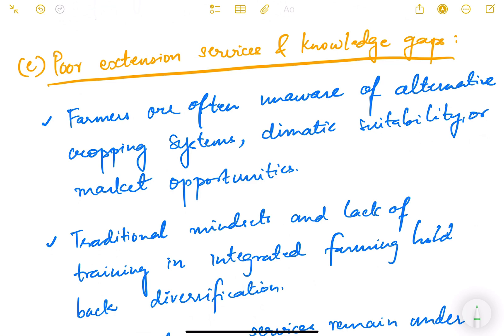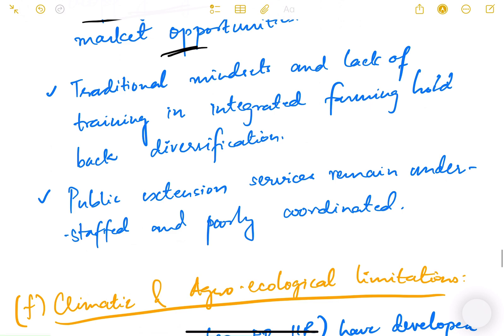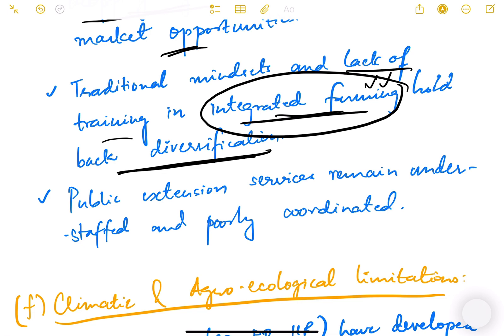The next constraint is poor extension services and knowledge gaps. Farmers are often unaware of alternative cropping systems. Extension services are basically knowledge systems where farmers can learn about new equipment, machinery, climatic suitability, or market opportunities. Traditional mindsets and lack of training in integrated farming hold back diversification. Public extension services remain understaffed and poorly coordinated in most rural areas.